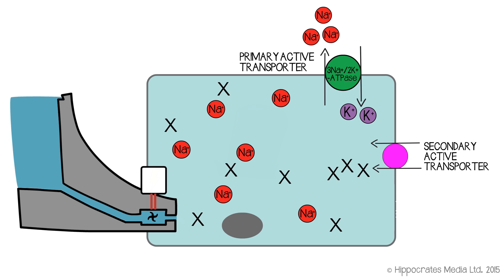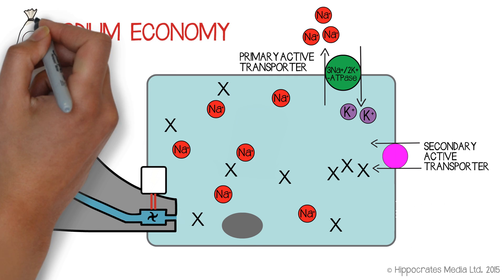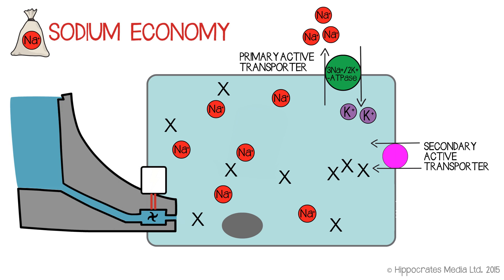The secondary active transporters can then tap into that gradient, and they can do all of the transport processes that are required. So sodium is sometimes referred to as the common currency of these animal cells. You pay for the gradient using ATP with your sodium pump, and then you tap into the gradient. You cash in, if you like, with all of your different transporters, and they use the energy to run their various processes. It's a sodium economy, and that's how animal cells tend to work.